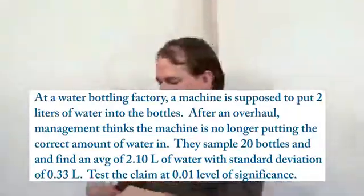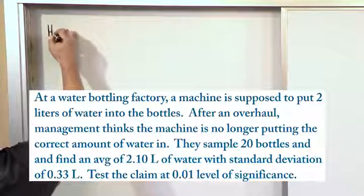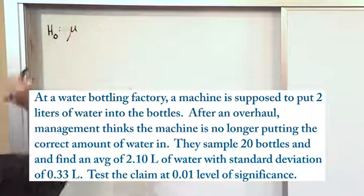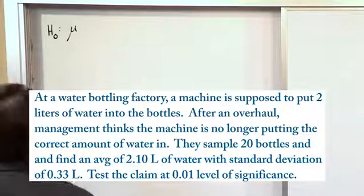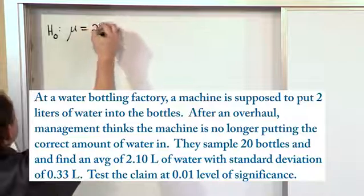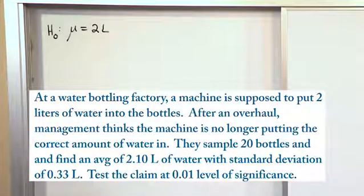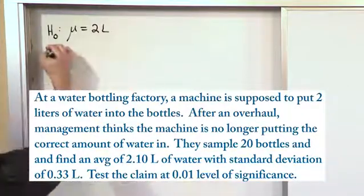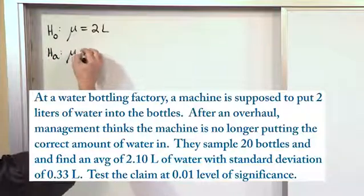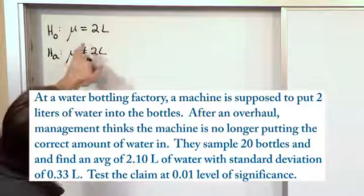So let's go and first — the most important thing — we have to write the hypotheses down. What is the null hypothesis in this case? Well, first of all, it's a mean — it's a liquid level, which is a number. It says a machine is supposed to put two liters of water in, so the mean should be equal to two liters. It doesn't say anything about greater than or less than for the null; it just says it should be putting two liters in, so that's an equality. After the overhaul, management thinks it's no longer putting two liters — notice there's no greater than or less than wording. So the alternate hypothesis is that the amount of water is no longer two liters. Notice these are still mathematical opposites: equal and not equal.